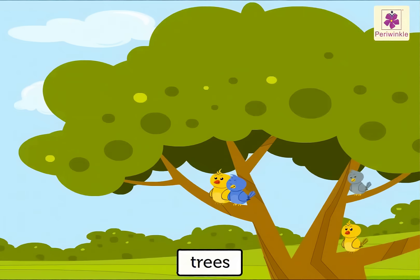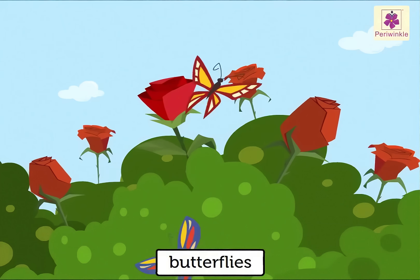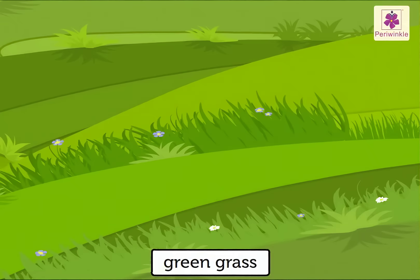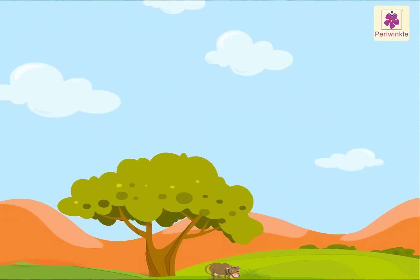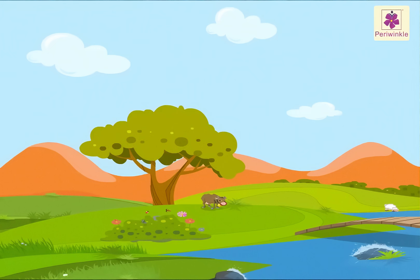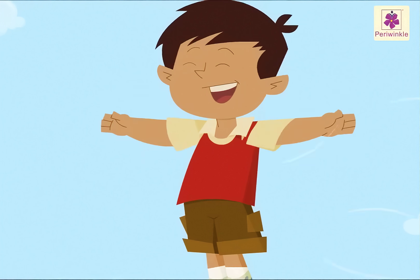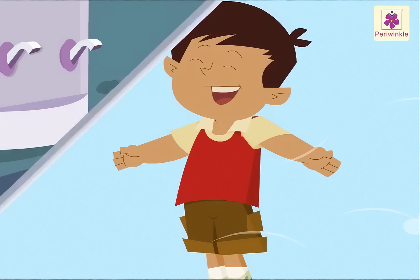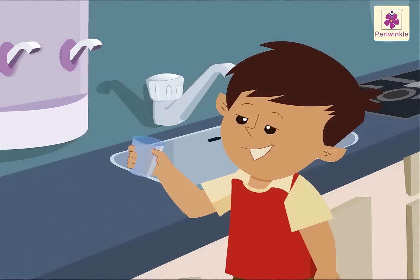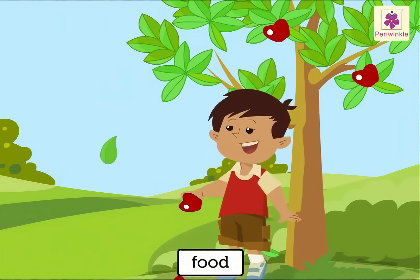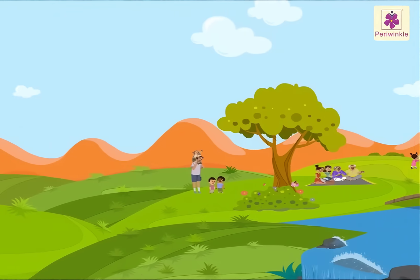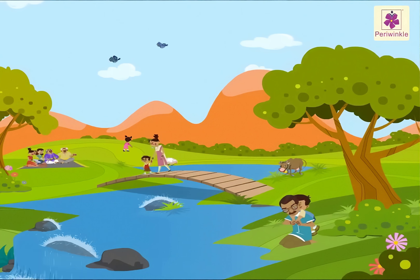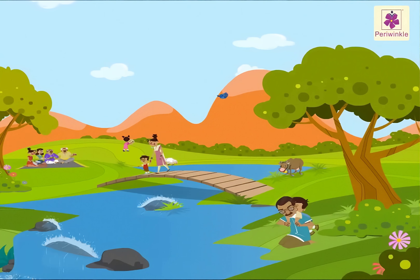Trees with birds, butterflies on red roses, green grass below, and the blue sky above — all make the environment. Environment satisfies all our needs. It provides us with air that we breathe, water that we drink, food that we eat, and clothes that cover our body. We live in this place; we are a part of this environment.